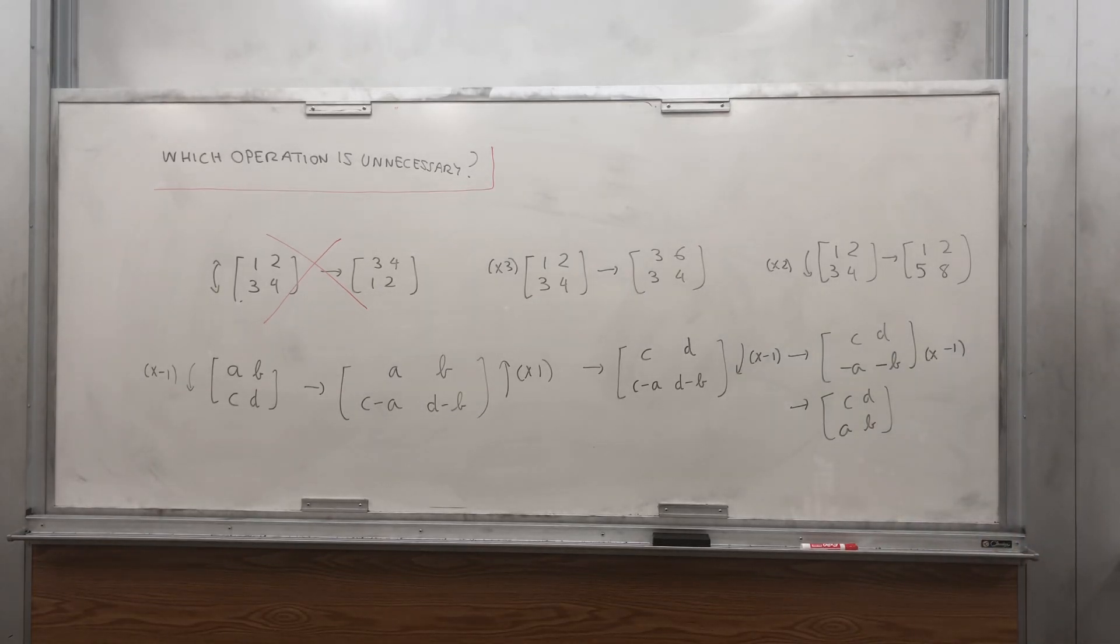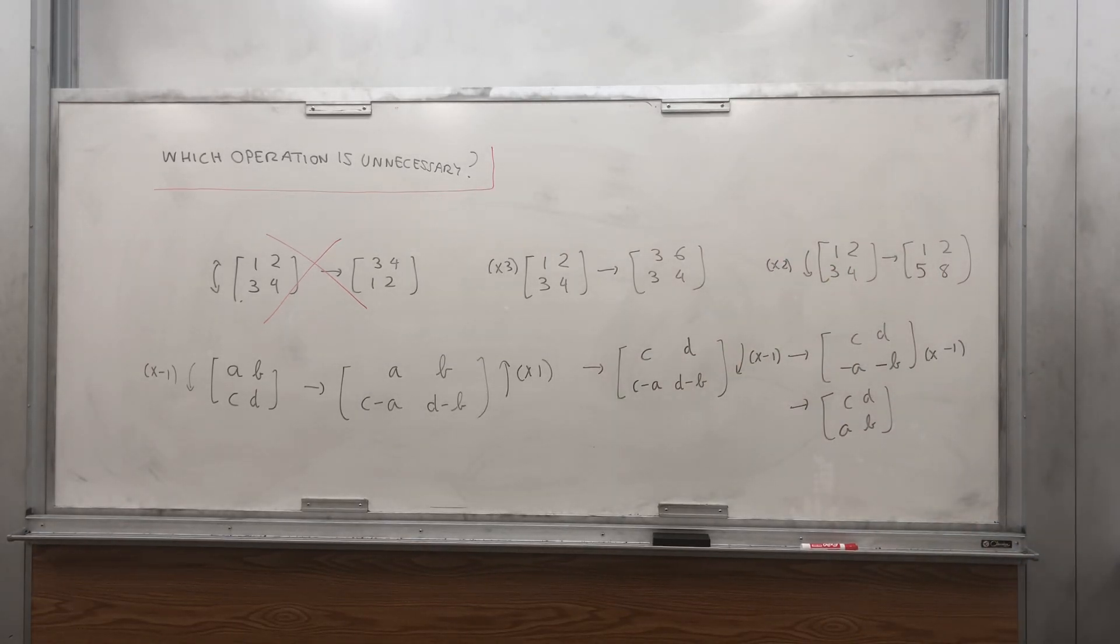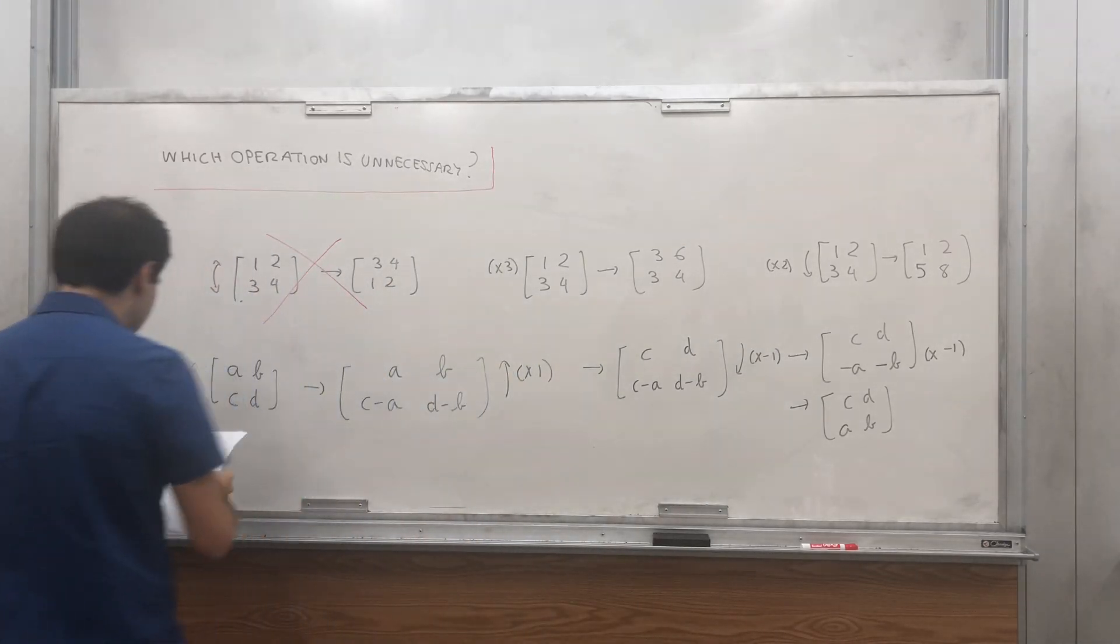And I don't know if, I mean, of course, if you don't have the first one, you need definitely one of those two, because how else can you multiply a row by something else? But at least this one, you don't need.